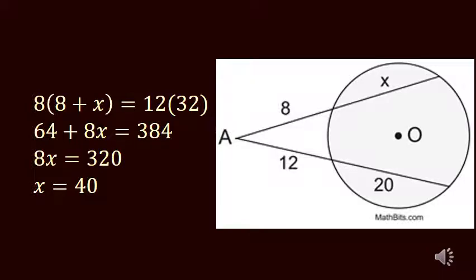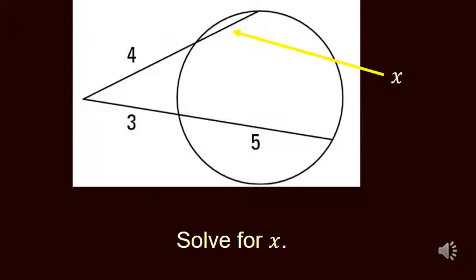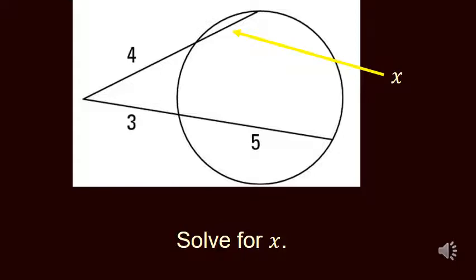Something I do want to warn you about is that the pictures on problems like this aren't necessarily drawn totally right. You know, here that definitely doesn't look like it's 40, but if you did have 8 outside, it would have to be 40 on the inside. And one more problem that I want you to take a minute and see if you can figure out how big x would be here. On this one, it looks like things are actually drawn a little bit more accurately. We would have 4 times 4 plus x equals 3 times 3 plus 5 gives you 8. And so you got to solve 16 plus 4x equals 24. If you work that out, x is going to end up equaling 2. And again, the key rule is outside times whole equals outside times whole.